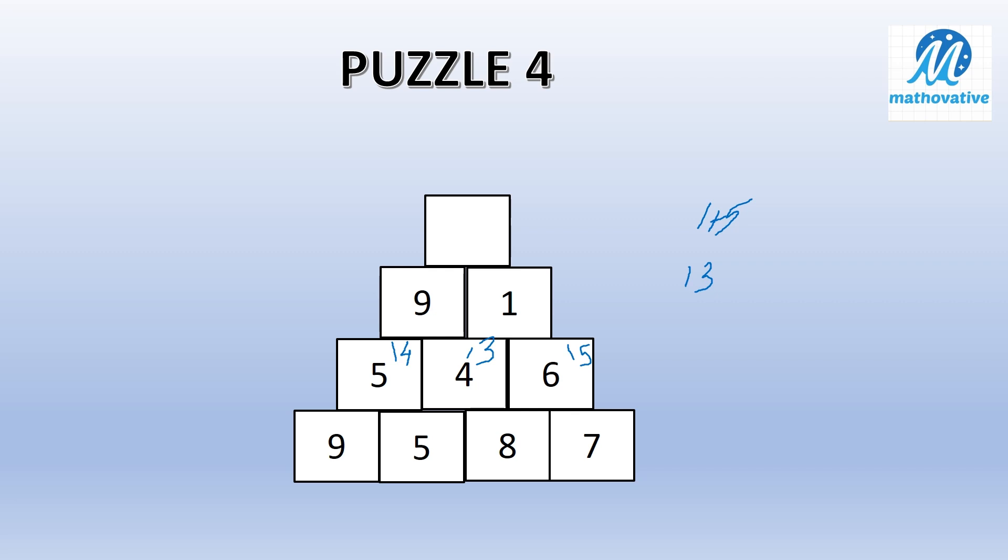4 plus 6 is giving you 10. But the digit sum will give you 1 plus 0 is 1. Here 5 plus 4 is 9. So this is giving you single digit, so this will remain the same. Now for the last row, 9 plus 1 is 10.